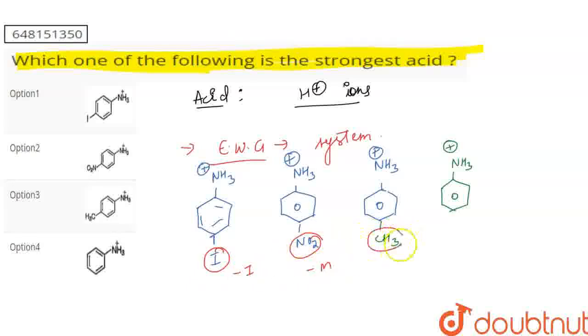You can tell that if it is plus I or hyperconjugation, it means it will be electron donating, so it will be the least. Now it is minus M and minus I, so there are two electron withdrawing groups, but minus M strength is more, so this is why it will be the most strong, that is this system, that is option 2. Thank you.